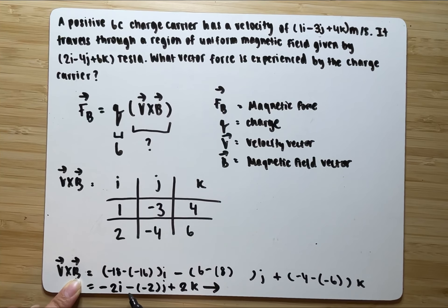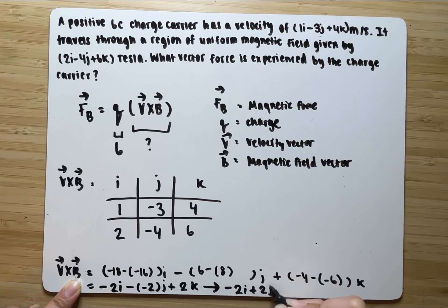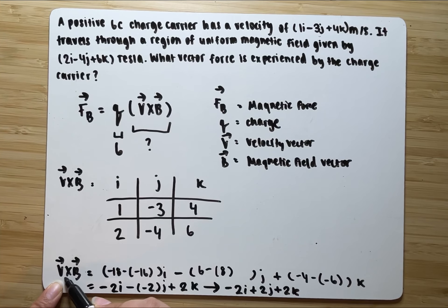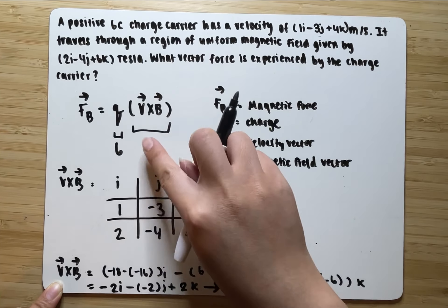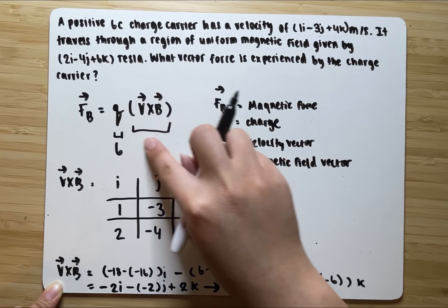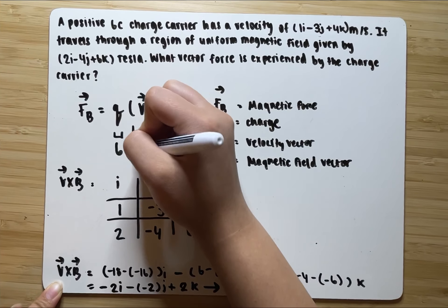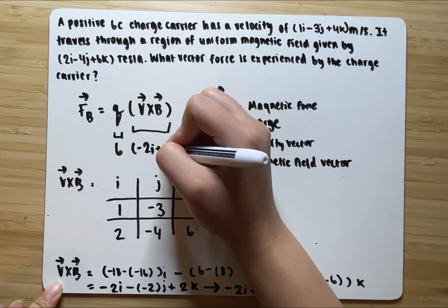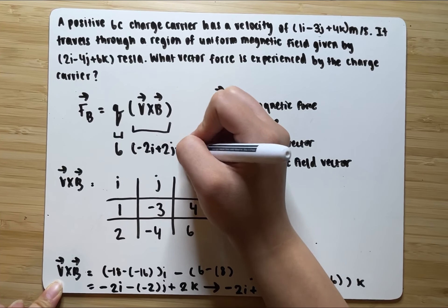We can simplify further because a minus and a minus is a plus. So we have negative 2i plus 2j plus 2k. This is our result vector for the cross product between the velocity vector and the magnetic field vector. We can now write down negative 2i plus 2j plus 2k.